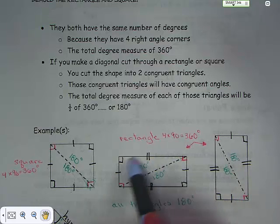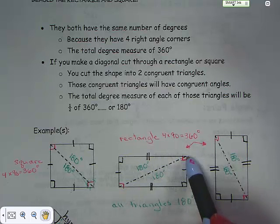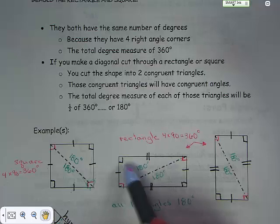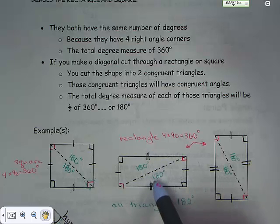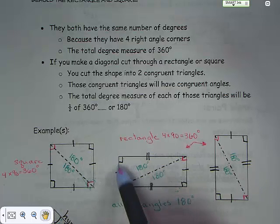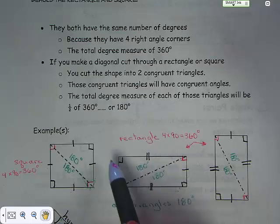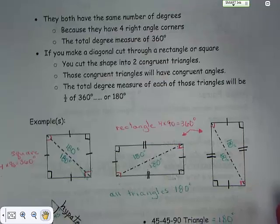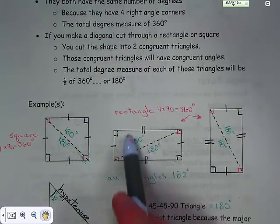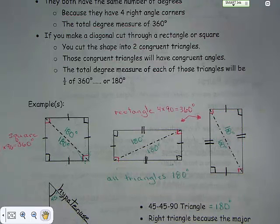If you have a rectangle, it's four times 90, which is 360 degrees. If you cut it in half diagonally, you get two exactly identical triangles. These two sides are the same on each triangle, and they both have 90-degree angles in the corners, so that's also a right triangle. The version on the right side is the same, only set vertically.